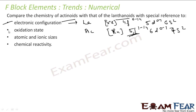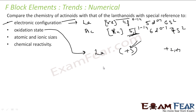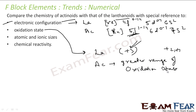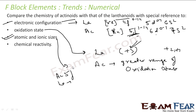Regarding oxidation state: lanthanides mostly show +3 oxidation state, with some showing +2 and +4 as well. Actinides have a greater range of oxidation states, primarily because the 5f, 6d, and 7s orbitals are of comparable energies. For atomic and ionic size, both show contraction, but actinide contraction is more prominent than lanthanide contraction because 5f has poorer shielding effect than 4f.